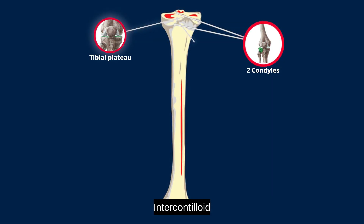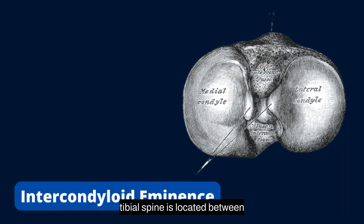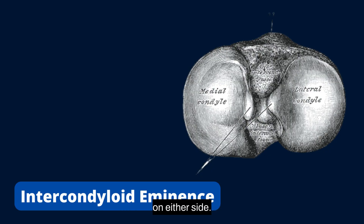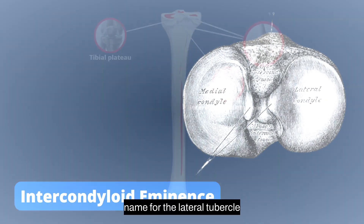Intercondylar eminence, or tibial spine, is located between the two condyles. It appears as the medial and lateral intercondylar tubercles on either side. The Gerdy tubercle is another name for the lateral tubercle.